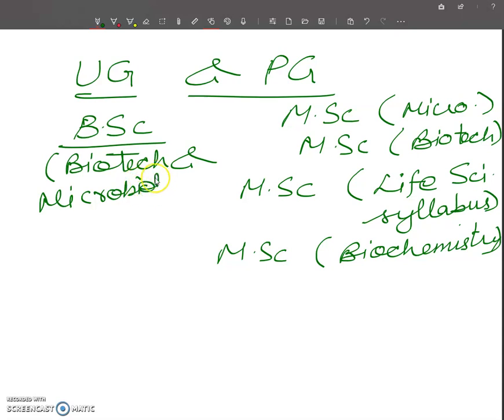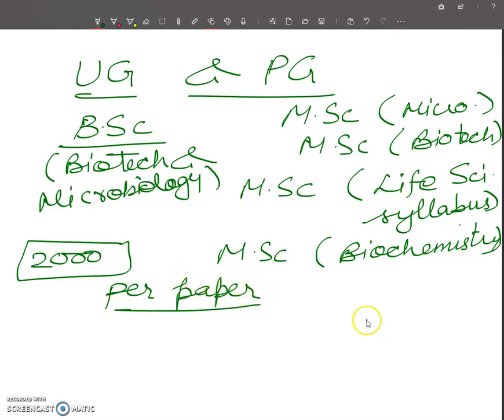For this, you have to pay 2,000 per paper. We are taking fees from students 2,000 per paper. In your semester exams, suppose you have four papers in one semester, you have to pay 8,000. So in UG and PG courses we are taking fees paper-wise, not month-wise. For all the detailed discussion, you can contact me on my contact number or you can email me also.